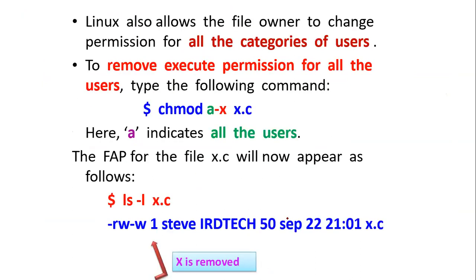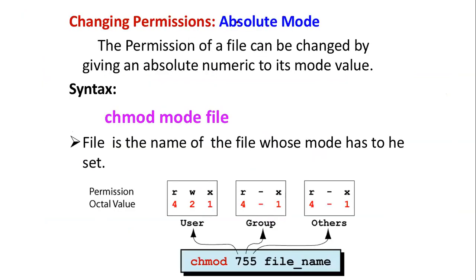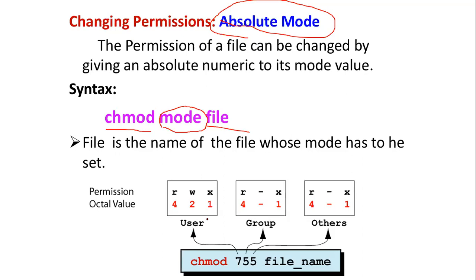Today we will see about permissions dealt with in absolute mode — how we are going to represent everything. The syntax is the same: the chmod command, followed by the mode value (absolute numbers), followed by the file name. In absolute mode, read permission is 4, write permission is 2, and execute permission is 1. For a user, read plus write plus execute equals 4 plus 2 plus 1, which is 7.